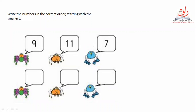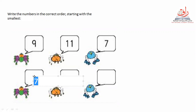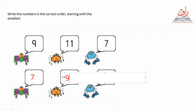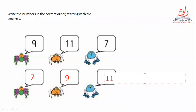Seven! Good job! Let's write number seven here. It's too small, so I'm going to change the size of the font. Okay — seven, then... eleven? No, then nine. Then eleven. Good job! So this is how we write numbers in the correct order, starting with the smallest.